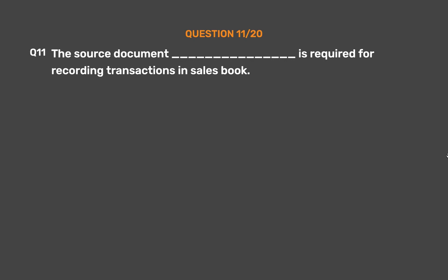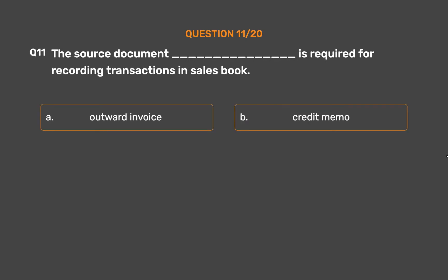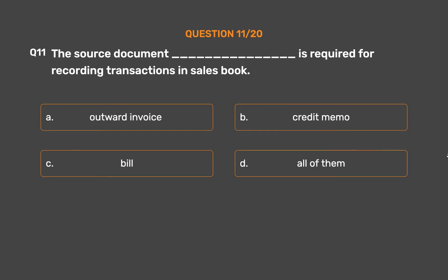Question number eleven: which source document is required for recording transactions in the sales book? Option A: outward invoice. Option B: credit memo. Option C: bill. Option D: all of them.